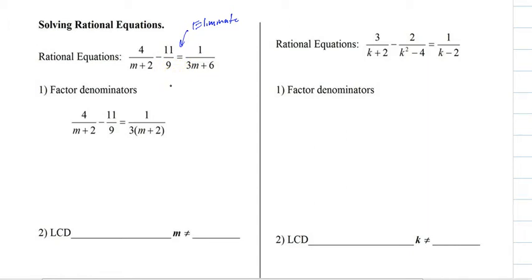So the first thing we do is we take every single denominator and factor them just like this. And I'll put that one in a parenthesis. And then we write the LCD, which is 9, m plus 2. Because 3 and 9 is 9, and then we have an m plus 2.